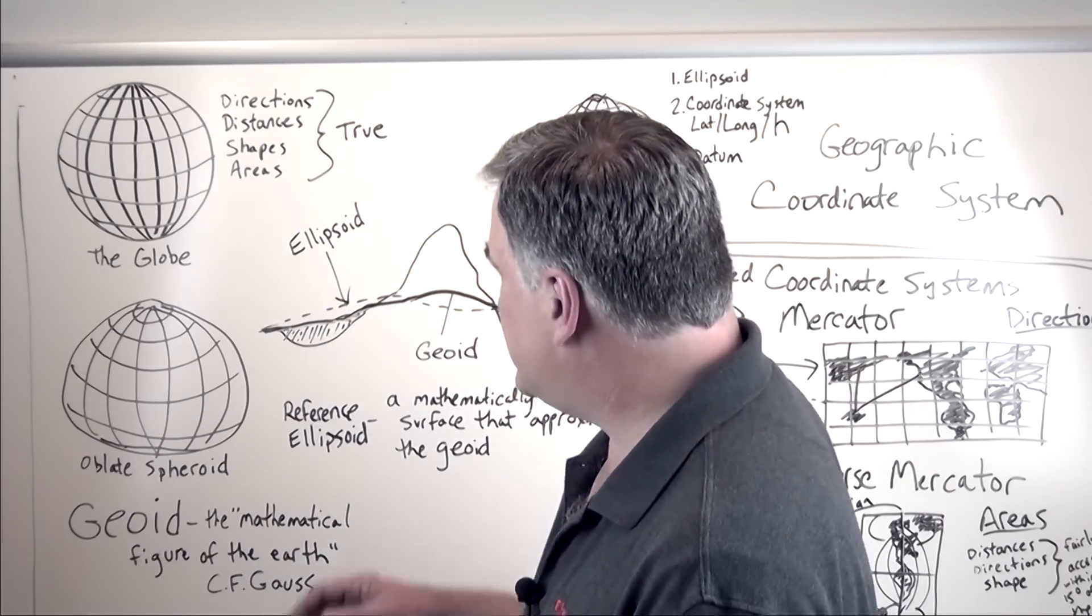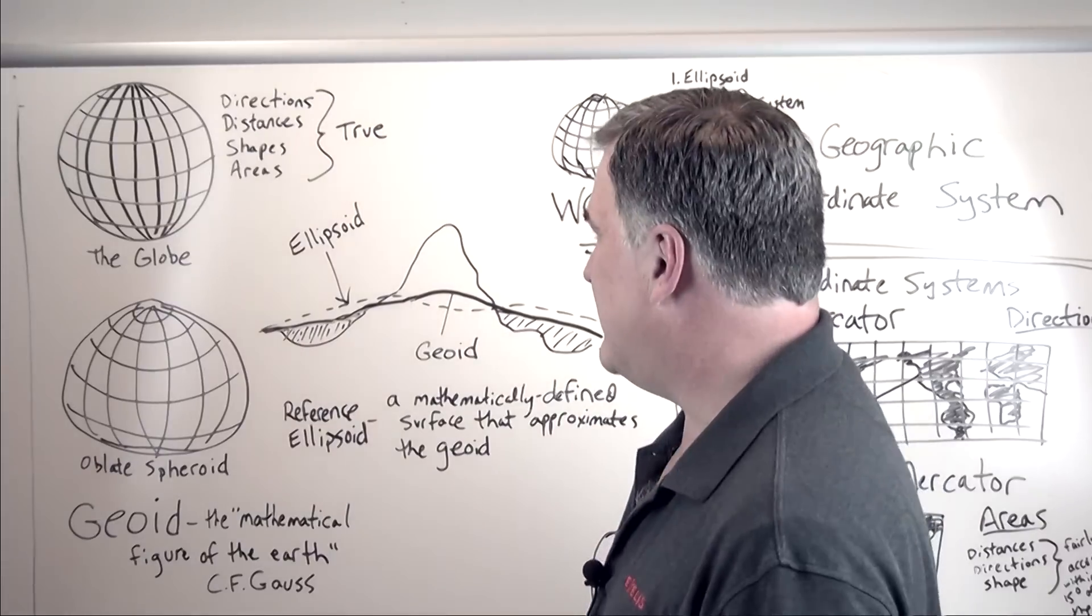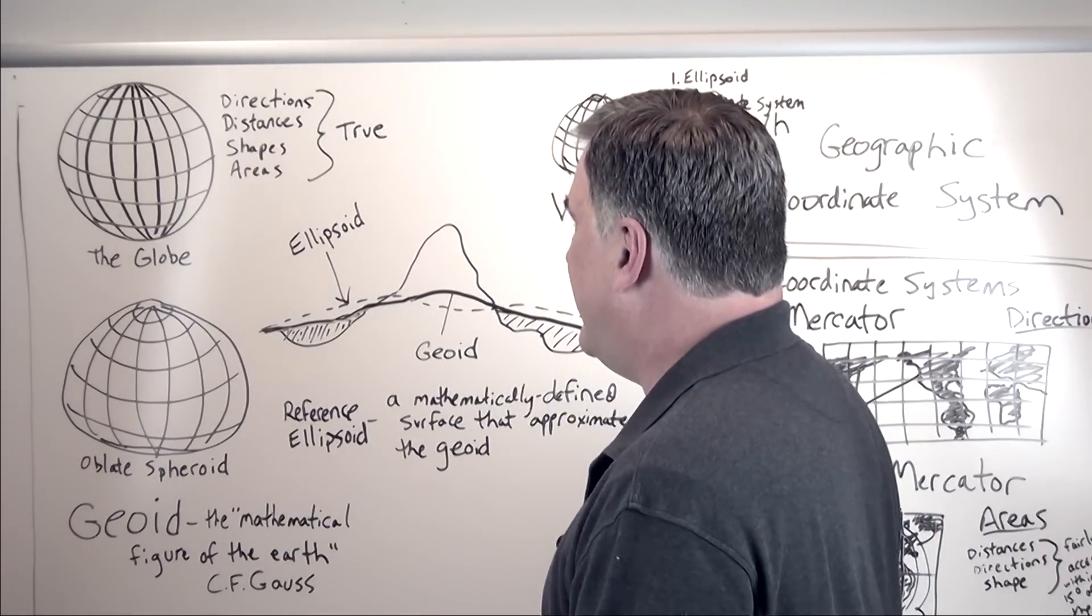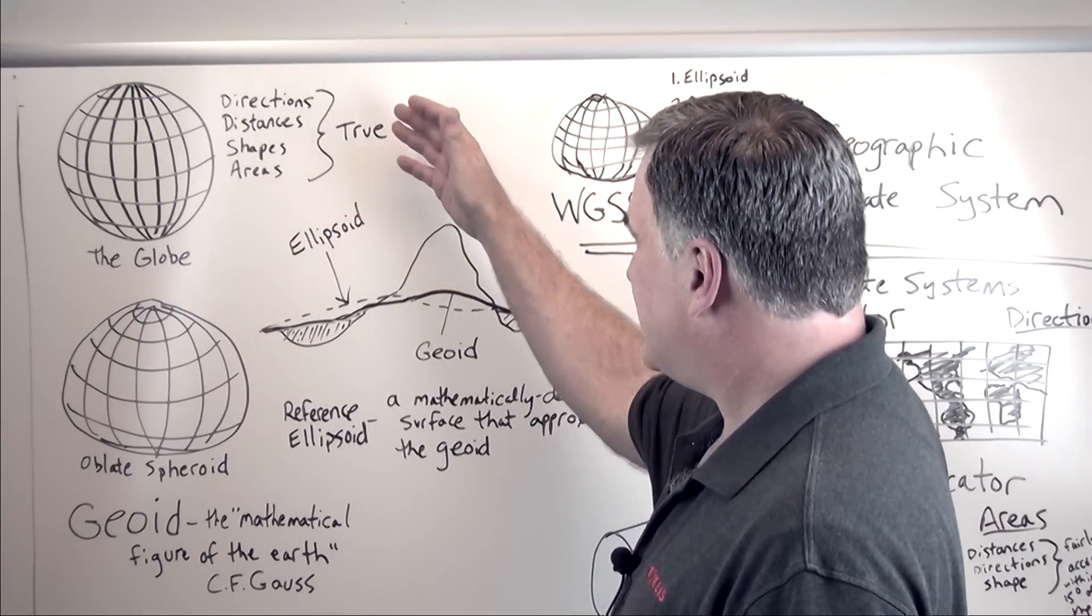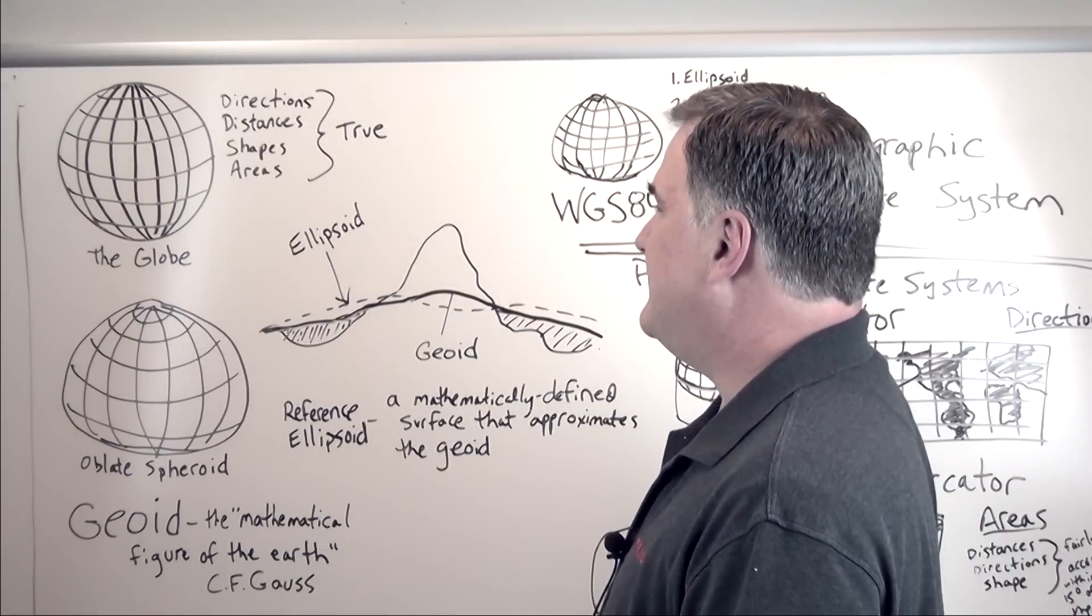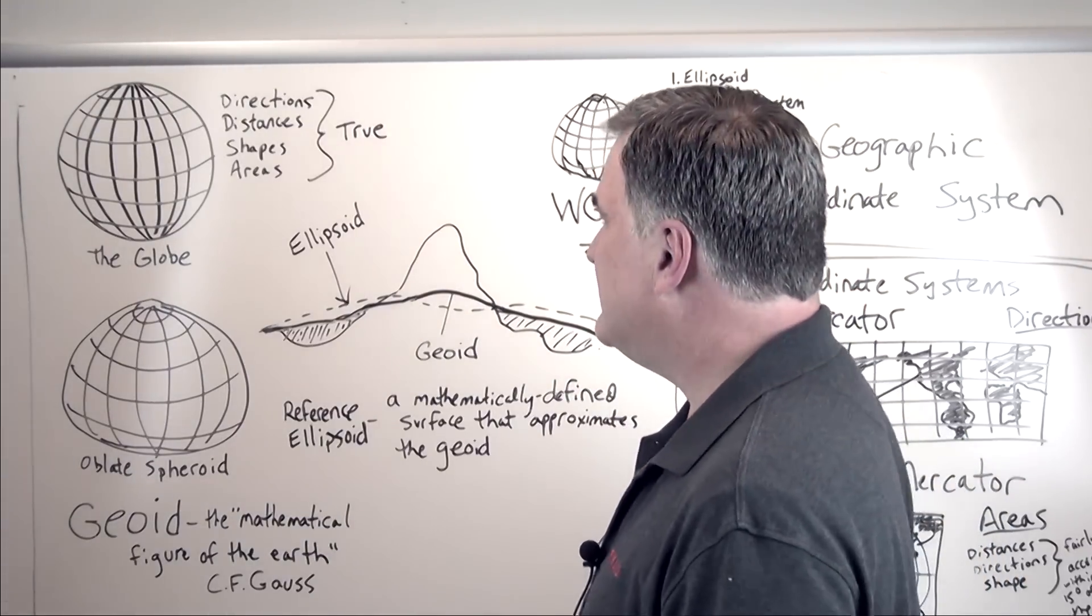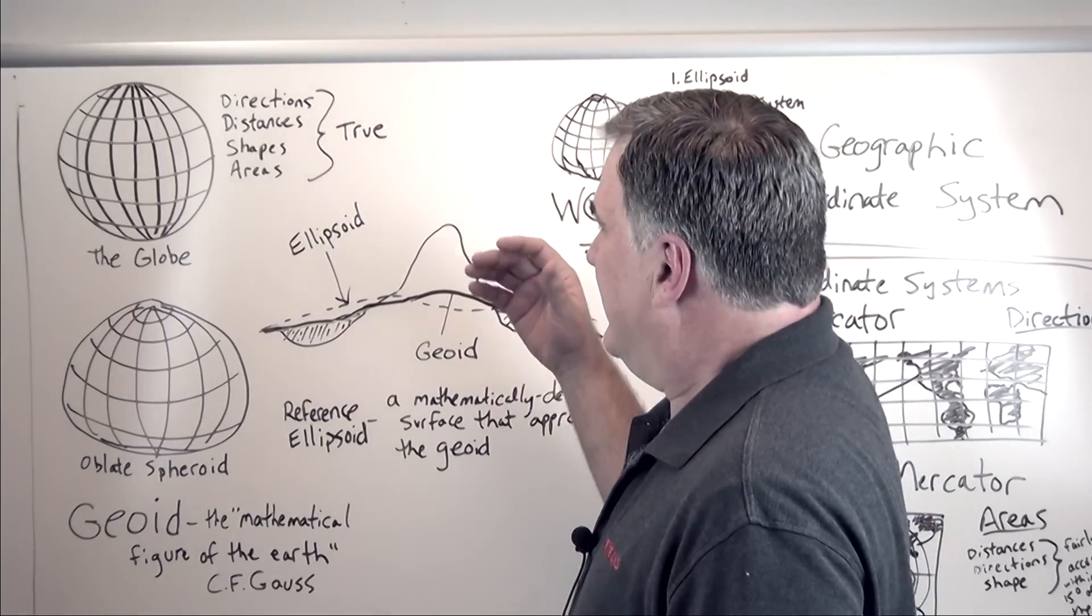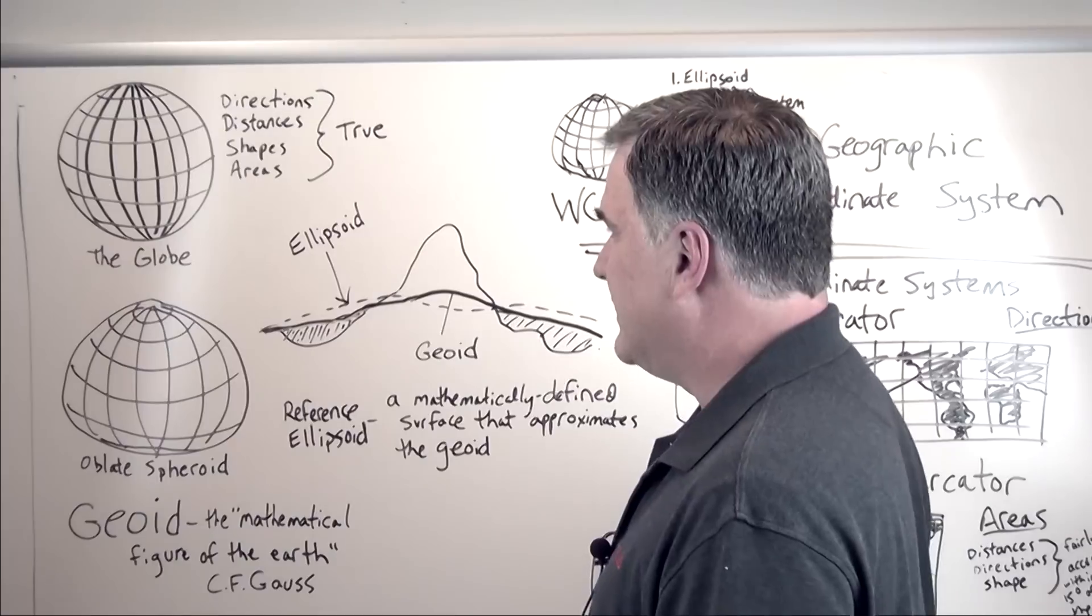So we start out with our old friend the globe, which is very handy for examining geographic spaces. Because it is a three-dimensional spherical object, basically you can see that directions, distances, shapes, areas, all of those good quantities that are associated with mapping are preserved. They're constant, they remain true on the globe.